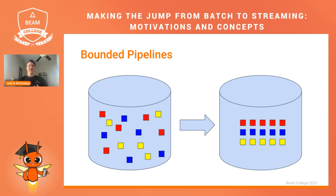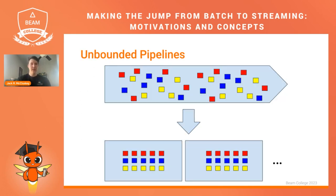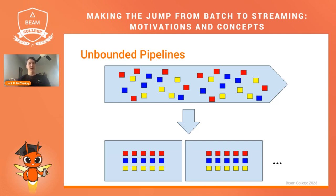Bounded pipelines are visually very simple. You have some amount of data on disk or from some source, you run your pipeline doing some transforms, sorting, aggregations, and you're back into your sink with your data transformed. We have this nice organized visual. Unbounded pipelines are more complicated — you have some stream of data coming in, and when you run your pipeline you're organizing it into discrete units along that stream, and chunks of that stream are being organized as you go.